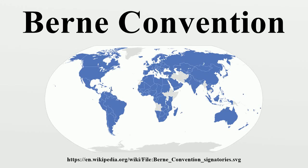The Berne Convention for the Protection of Literary and Artistic Works, usually known as the Berne Convention, is an international agreement governing copyright, which was first accepted in Berne, Switzerland, in 1886. The Berne Convention formally mandated several aspects of modern copyright law. It introduced the concept that a copyright exists the moment a work is fixed, rather than requiring registration. It also enforces a requirement that countries recognize copyrights held by the citizens of all other signatory countries.